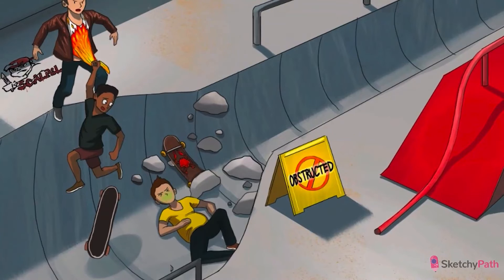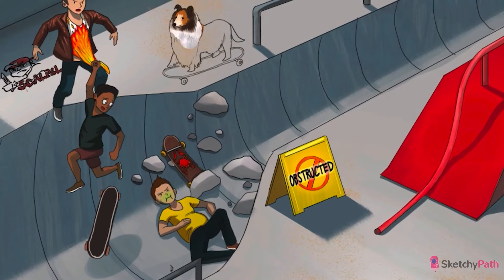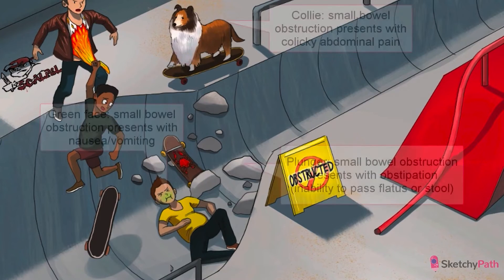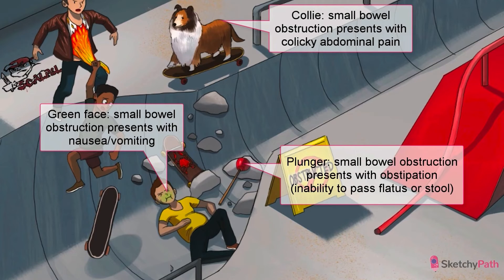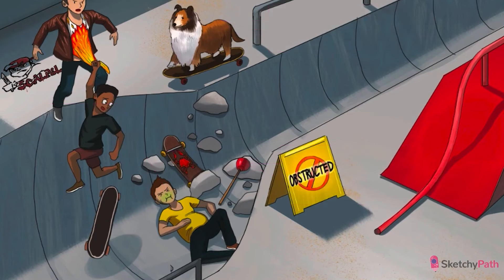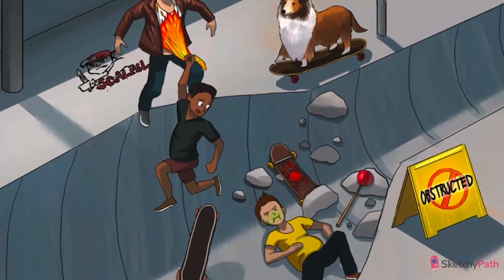Patients with acute small bowel obstruction typically present with nausea and vomiting, obstipation — which is an inability to pass flatus or stool — and some on and off colicky abdominal pain. To show this, we'll sketch in our colicky collie who's ready to shred, plus our constipation plunger, and some nausea and vomiting.